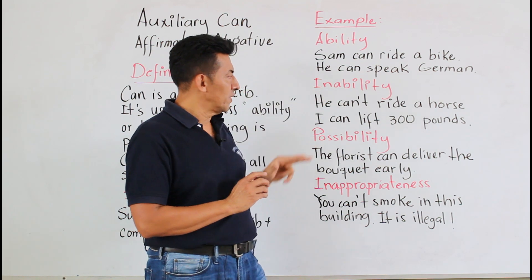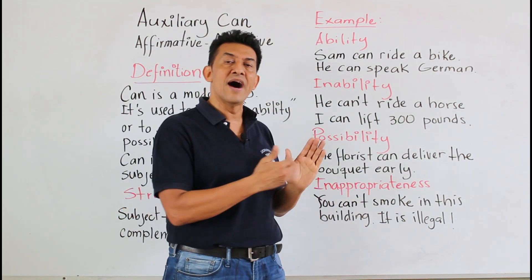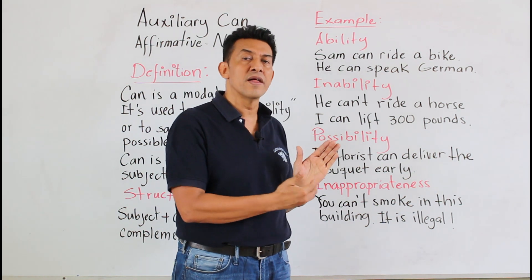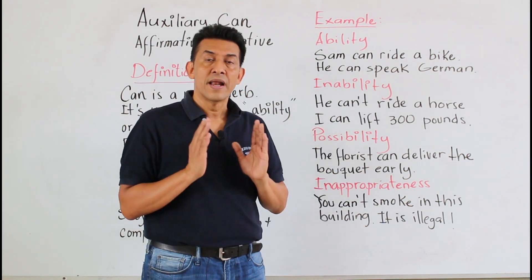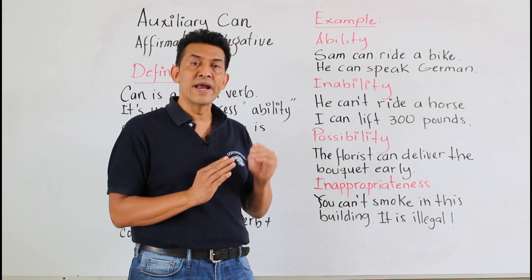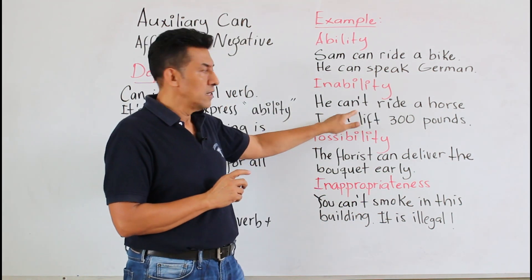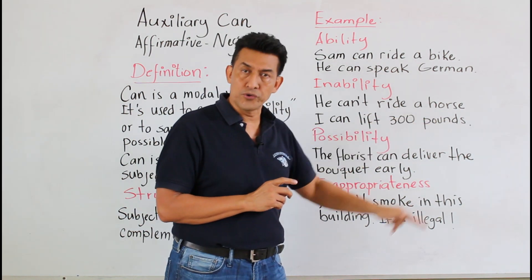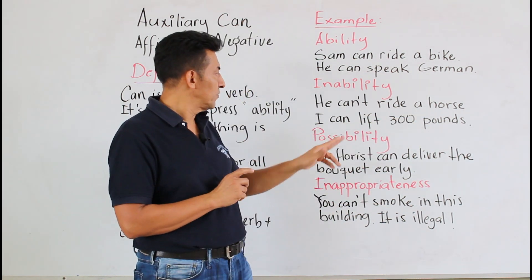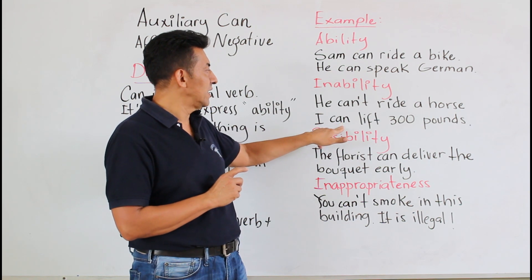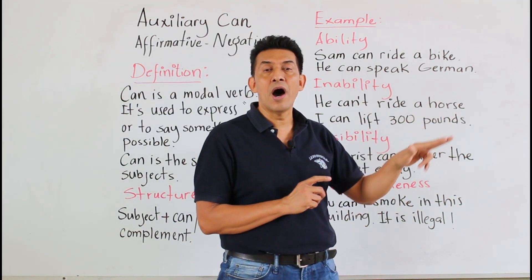La otra parte sería inability — esas son cuando uno no tiene la habilidad de ejercer algo. Ahí es cuando se utiliza la oración en negativo. Veamos los ejemplos. He can't ride a horse. Another example is I can't lift three hundred pounds.